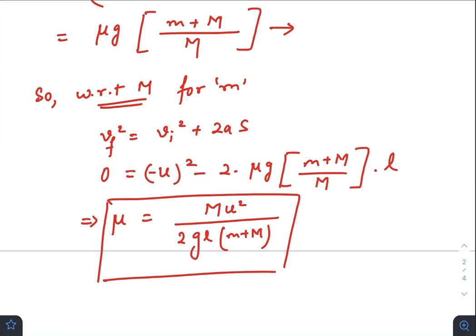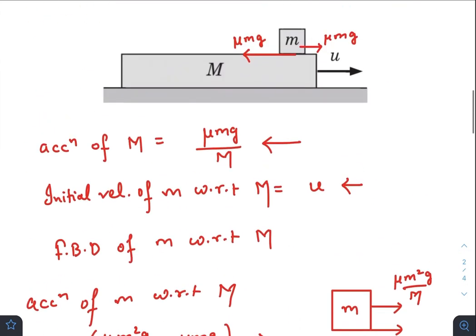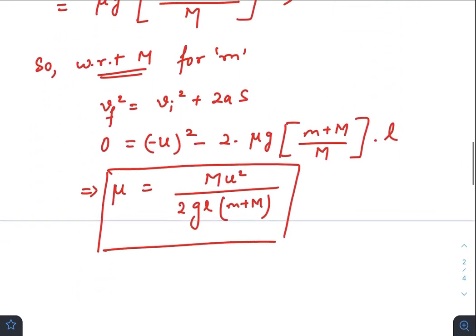I have put a negative sign here because the displacement of small m with respect to capital M will be towards left. So if you calculate it you will get the value of coefficient of friction between the two masses.